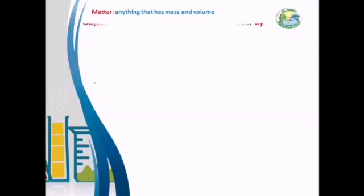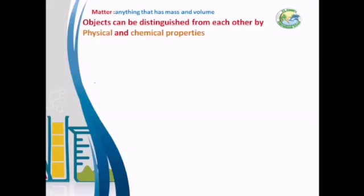Objects can be distinguished from each other by physical and chemical properties. In this lesson, we will study the physical and chemical properties that we can use to distinguish between objects. First, we will start with physical properties.